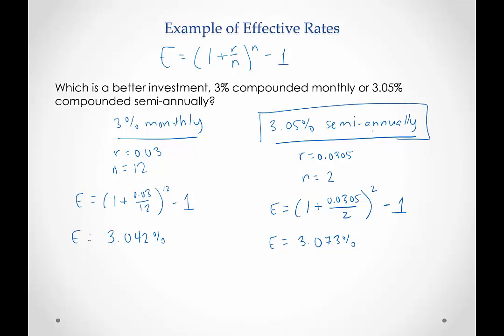Assuming this is an investment, if this is a loan, I might want to go with the 3% because that would be less. So again, what is this saying? This is saying that 3.073% would be the equivalent simple interest rate — that would be a better simple interest rate.